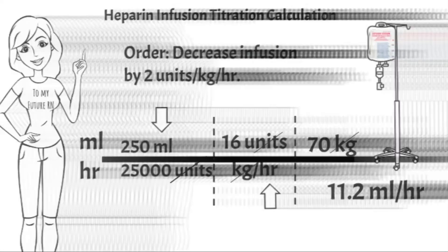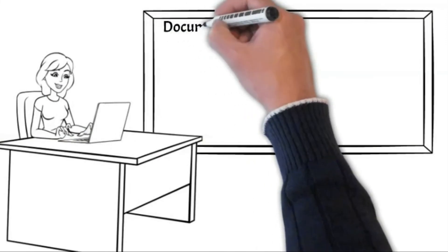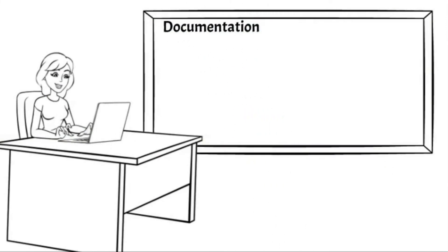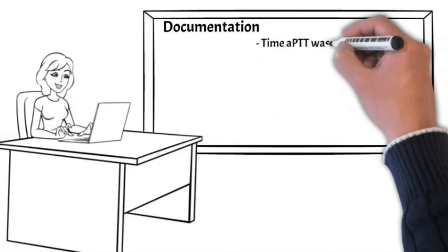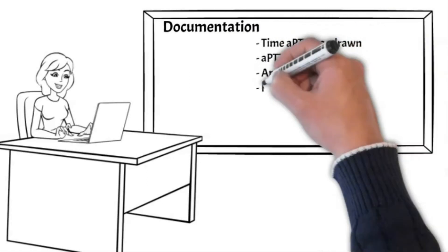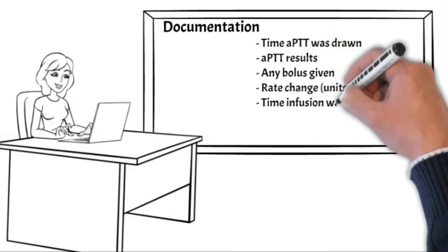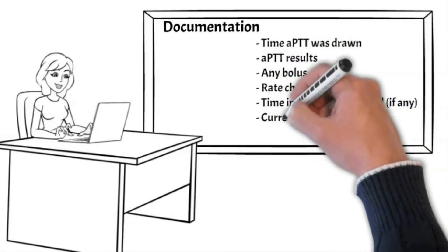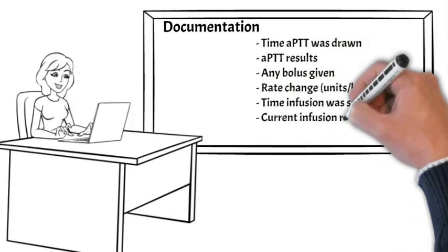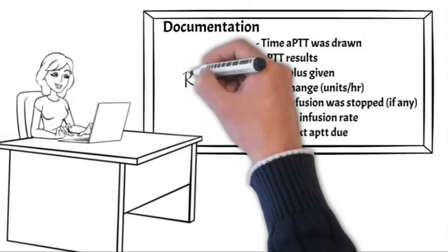Now it's time to document. Be sure to document the time the aPTT was drawn, any aPTT results, any boluses given, rate changes in units per hour, any time the infusion was stopped, the current infusion rate, and the next time an aPTT needs to be drawn. Don't forget your RN credentials and initials.